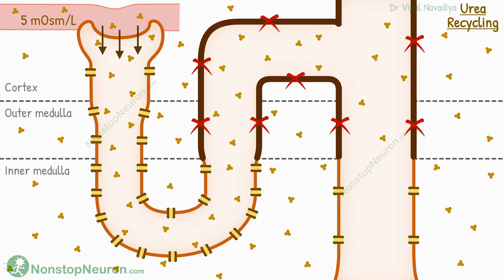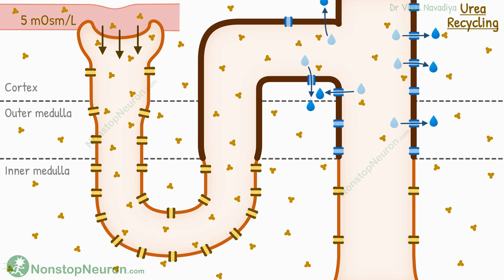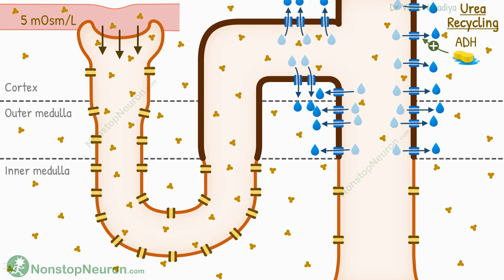As mentioned before, this part is impermeable to urea, so there is no urea reabsorption from this portion. However, the later part of this urea-impermeable area is permeable to water, so water does get reabsorbed from this portion. Antidiuretic hormone, also known as vasopressin, increases the water permeability of this area. So in the presence of ADH, water reabsorption is very extensive. Reabsorption of water alone, without reabsorption of urea, increases the urea concentration in the tubule.